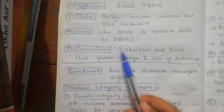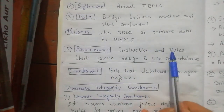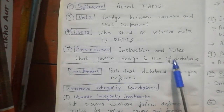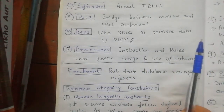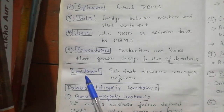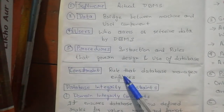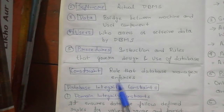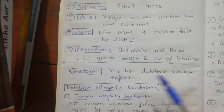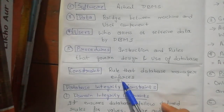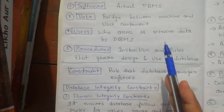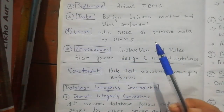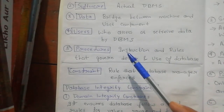Processors are the instructions and rules that govern the design and use of the database. We also have different types of constraints in a database. A constraint is a rule that the database manager enforces — defining what we have to do and what we don't have to do while accessing, modifying, or doing something on our database.